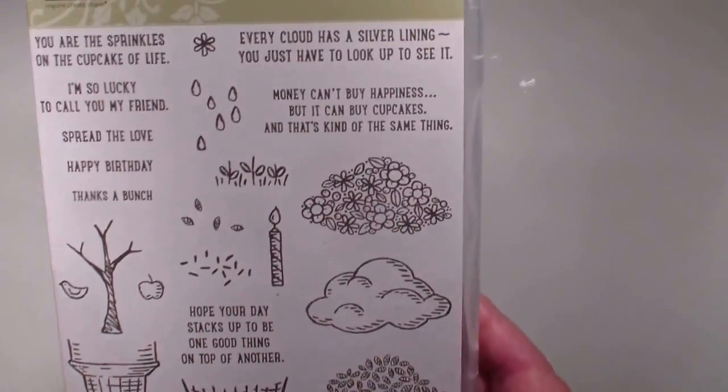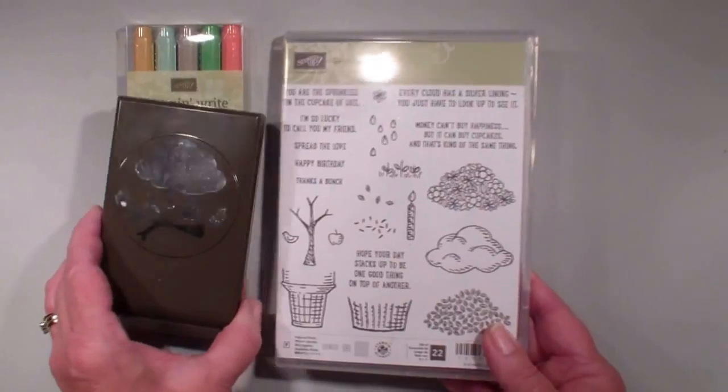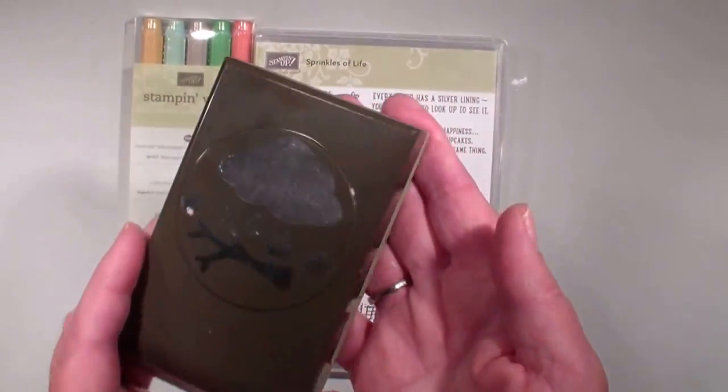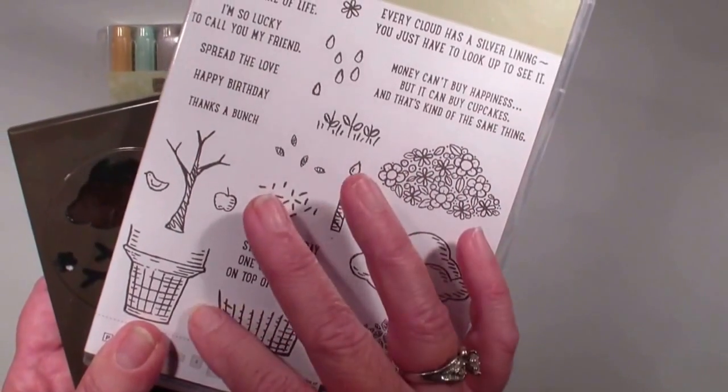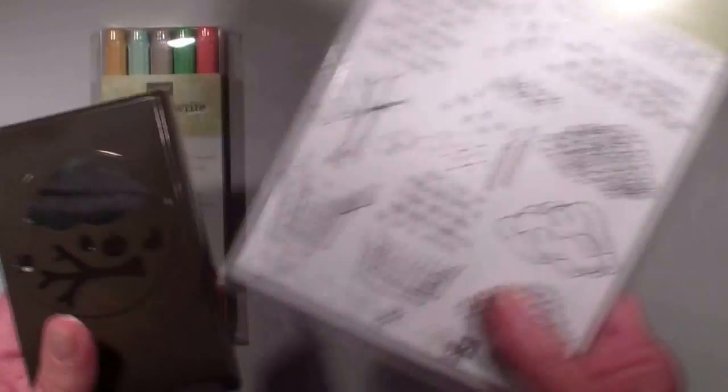So with that kit, you are going to get this stamp set, the wonderful Tree Builder Punch that matches this set so you can make trees and cupcakes and ice cream cones and more.